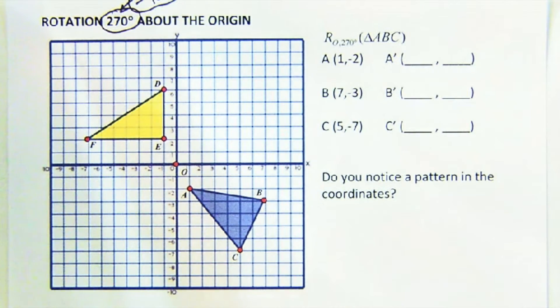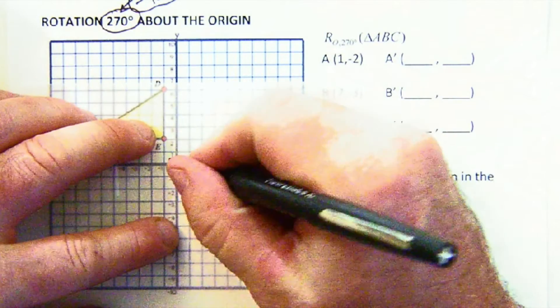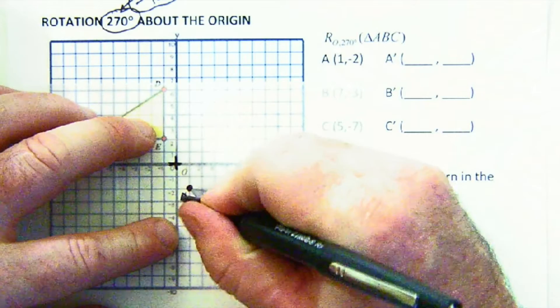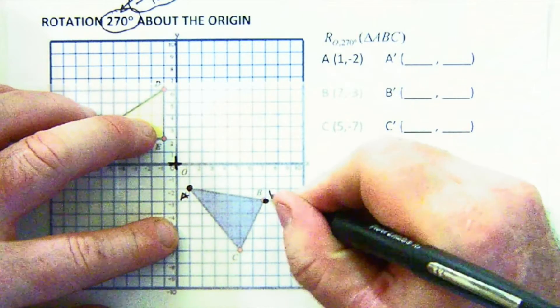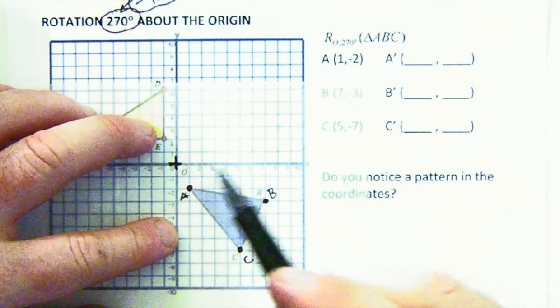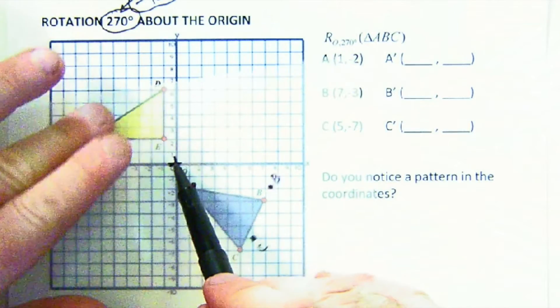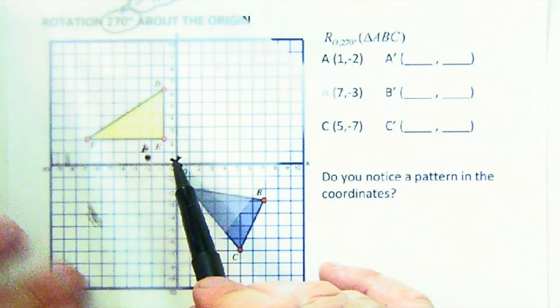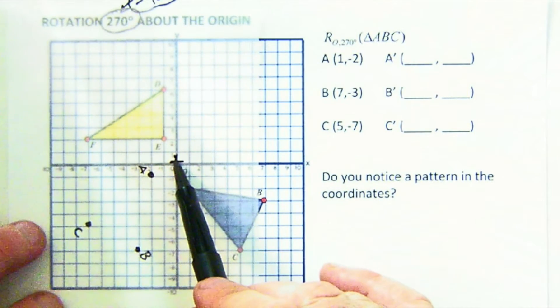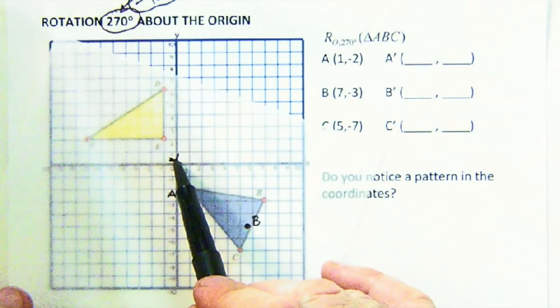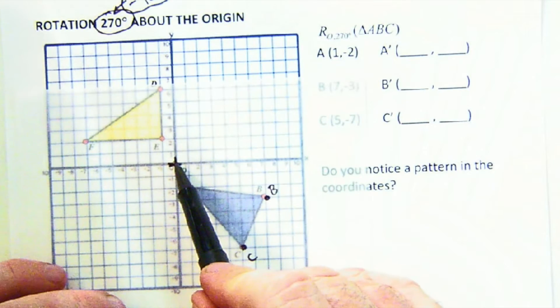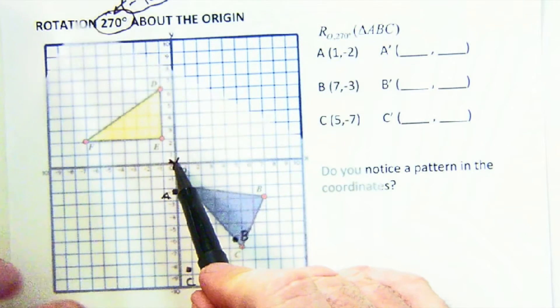All right, 270. We're moving ABC again. This time I think I'll do both just to prove that that's what's happening. So I could go 90 to here, 180 to here, 270 to here, or I could have just said, hey, another way to get there is just go the short way, just go negative 90.